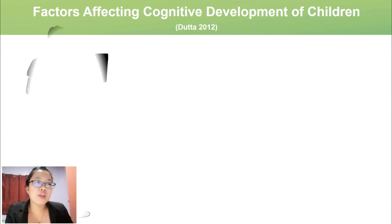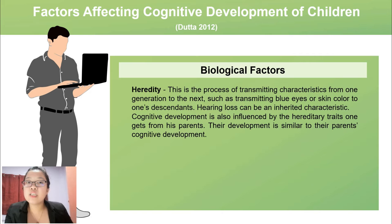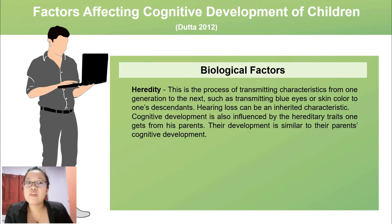The third biological factor is heredity — the process of transmitting characteristics from one generation to the next, such as blue eyes, skin color, or hearing loss to one's descendants. Cognitive development is also influenced by the hereditary traits one gets from parents; their development is similar to their parents' cognitive development.